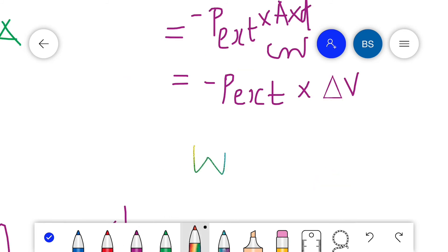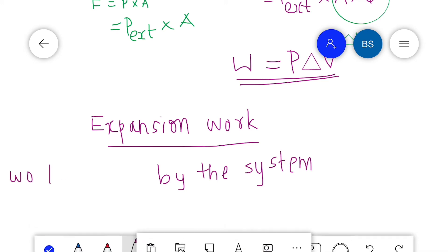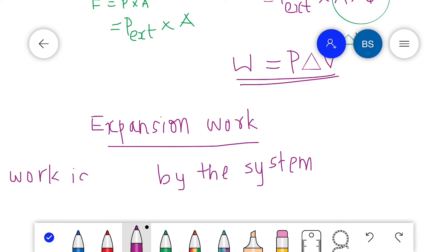So W equals minus P delta V. This is a very important equation. Here we have seen the expansion of the gas, so this is expansion work. The work is done by the system.